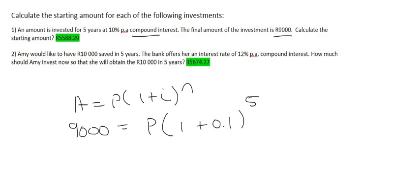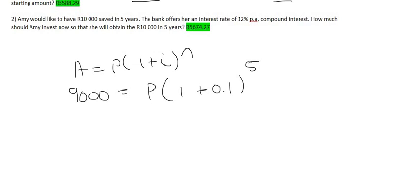To get P by itself—because between the P and the bracket is times—you divide the left-hand side by 1 plus 0.1 to the power of 5, and you type all of that in the calculator.